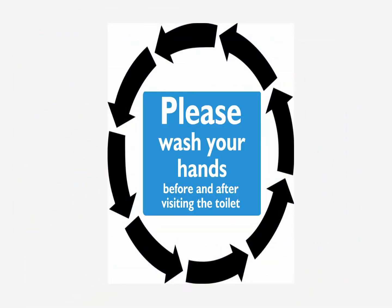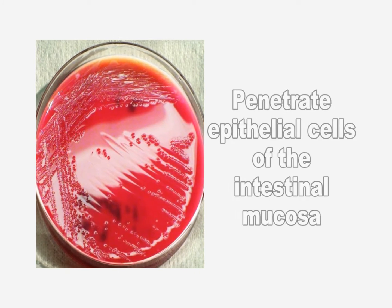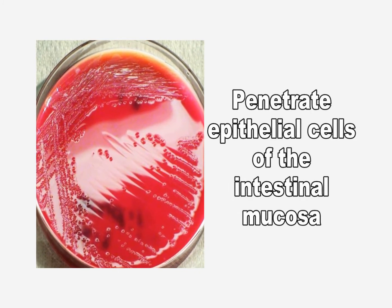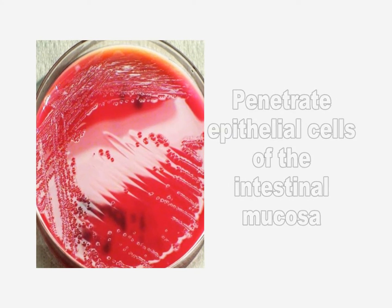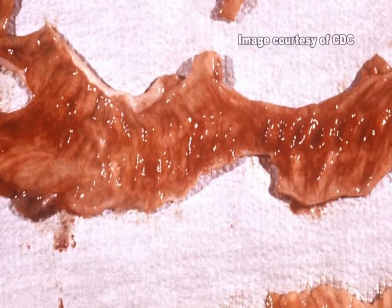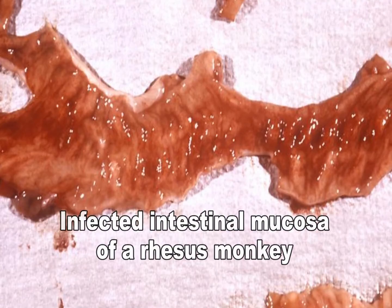The Shigella species are highly infectious agents that are transmitted by the fecal-oral route. The disease is caused when virulent Shigella organisms attach to and penetrate epithelial cells of the intestinal mucosa. After invasion, they multiply intercellularly, resulting in tissue destruction.